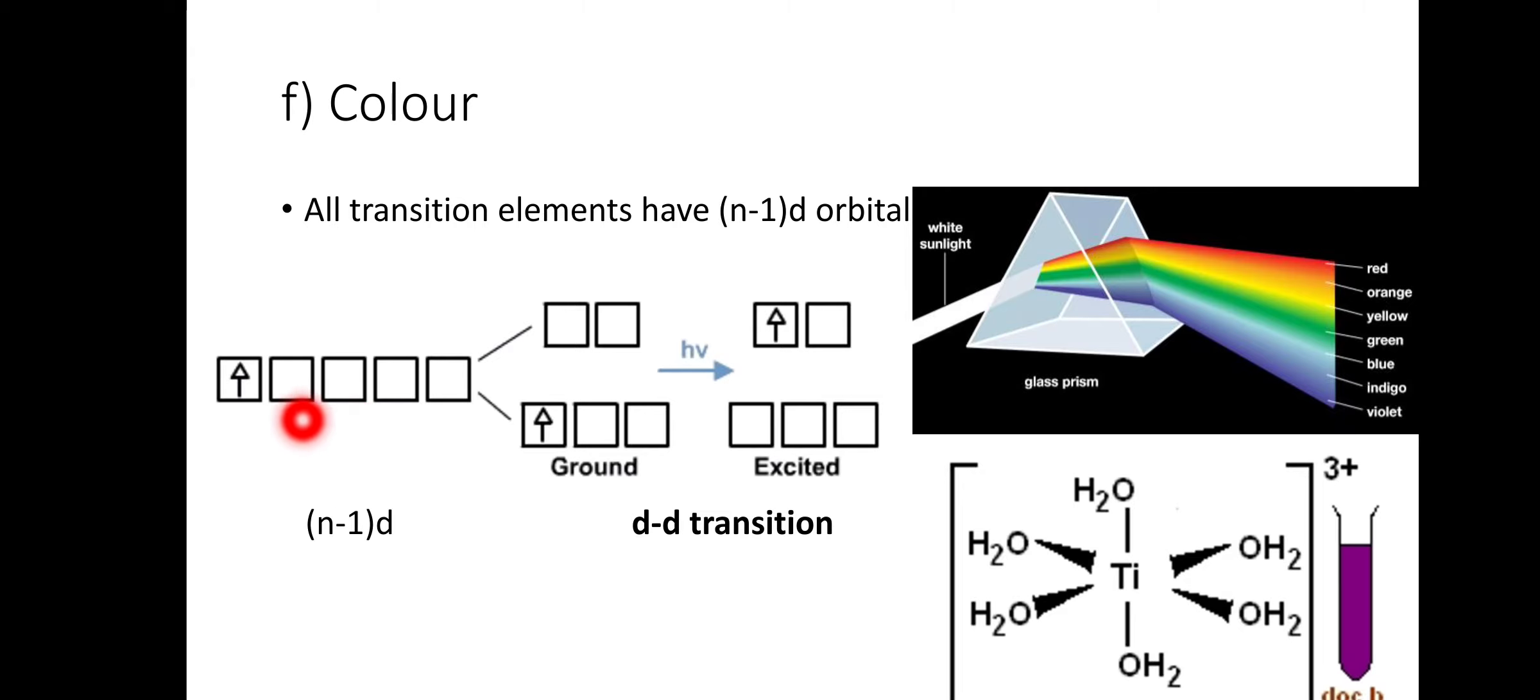When these orbitals are involved in bonding, they split up into two energy levels. They break down into two energy levels - one is a higher energy level and the other is a lower energy level.